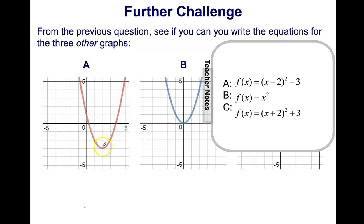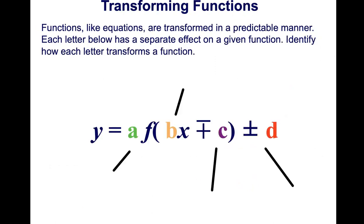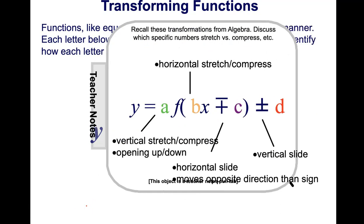For the third graph, it shifted 2 points and dropped 3 points, giving y equals x minus 2 whole squared minus 3. Copy the transformation equation for functions: the lowercase letter a represents vertical stretch, compression, or opening up and down; plus and minus values indicate horizontal slide and vertical slide. Copy all of this into your notes.